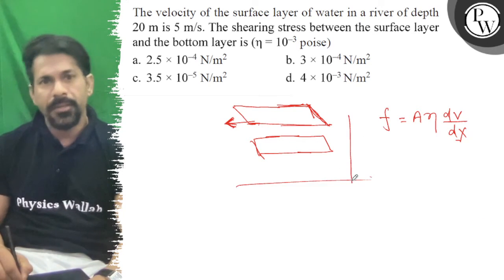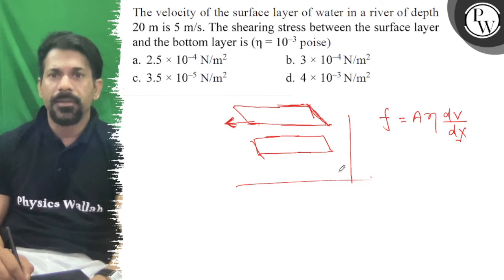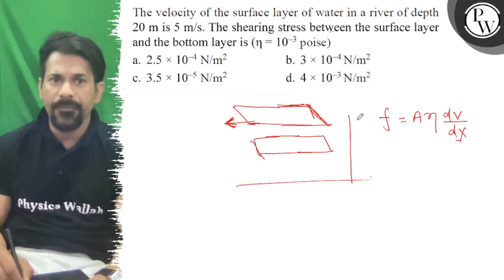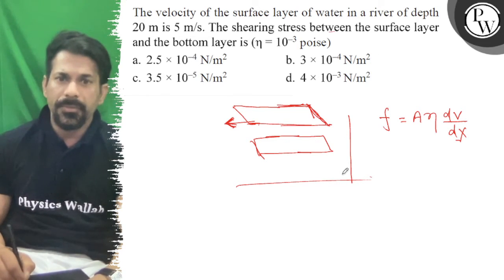This is the floor of the river, depth of 20 meters. The velocity of surface layer of the water in a river of the depth of 20 meters. So, let's talk about 20 meters depth.